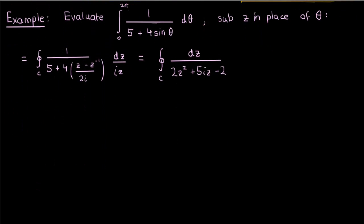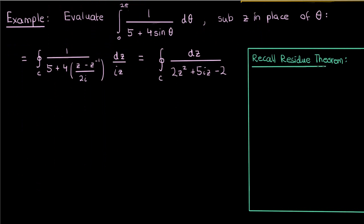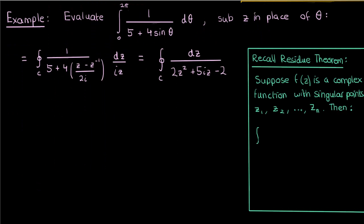What we want to do now is use the residue theorem to evaluate this integral. But before we use the residue theorem, let's take the time to recall the exact statement. The exact statement here is that if f of z is some complex function with a bunch of singular points or poles, then the contour integral of f of z over a simple closed curve C, which encloses all these poles, is just 2πi times the sum of the residues of f of z at each of the enclosed singular points.